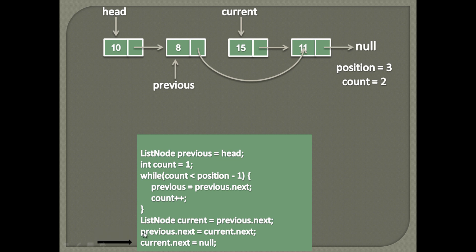Since current node's next is still responsible for holding the linked list, the last step would be to make its next point to null and return back the current node.